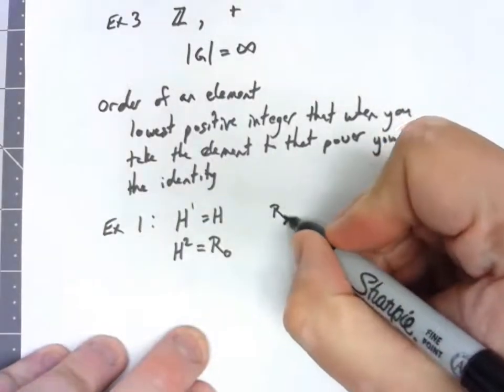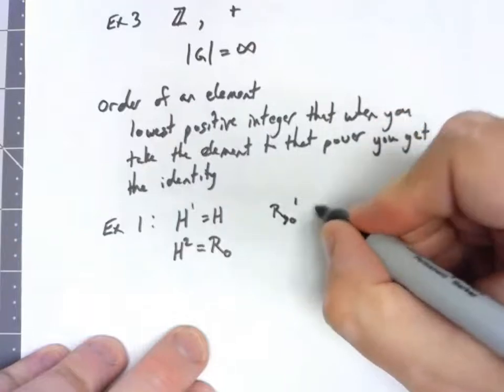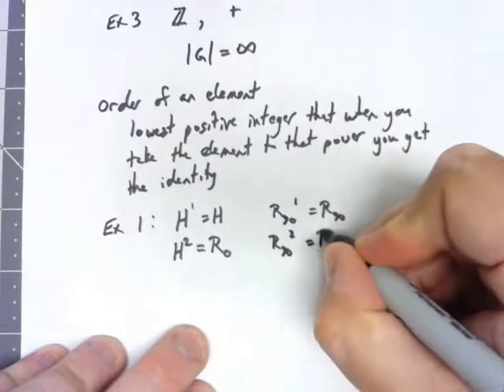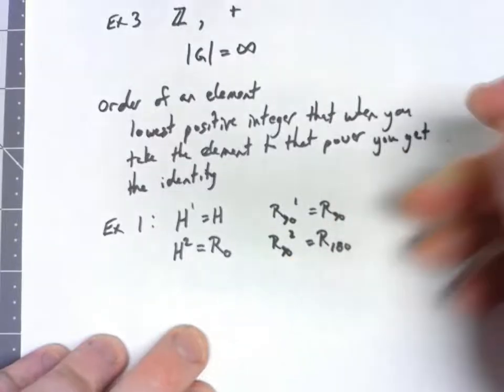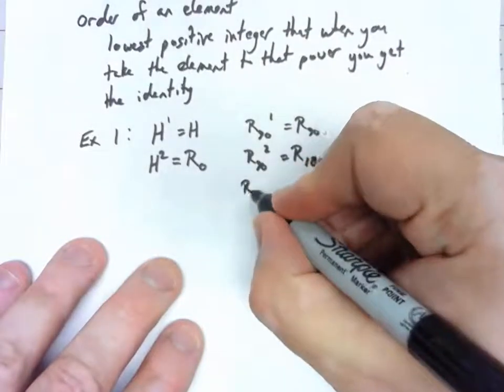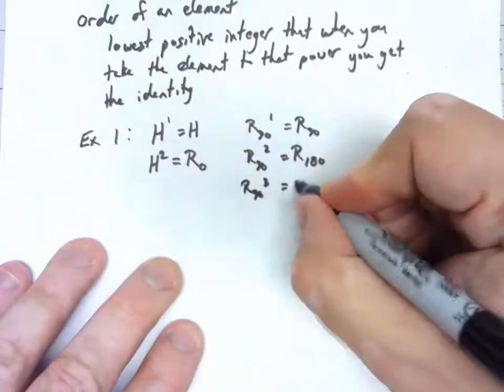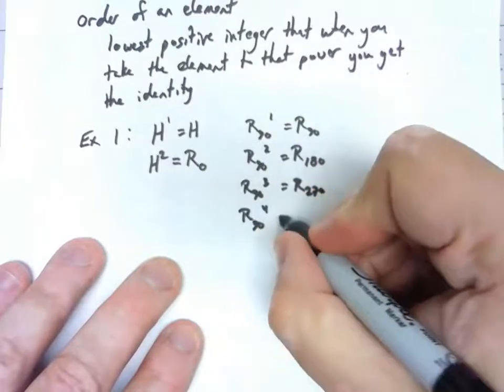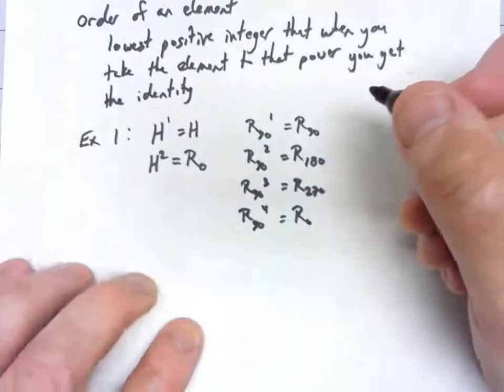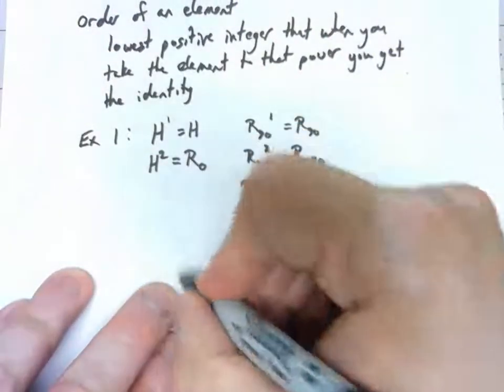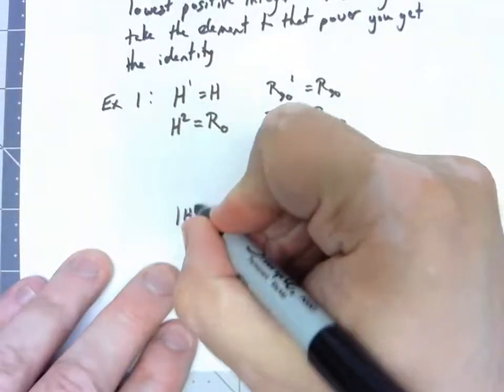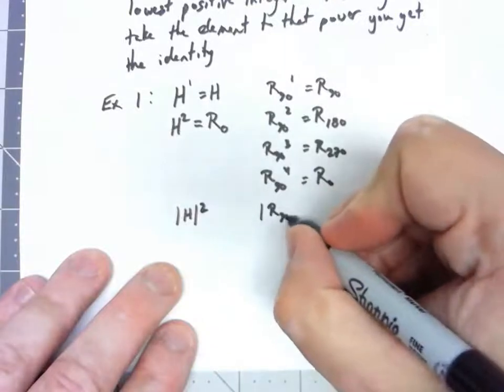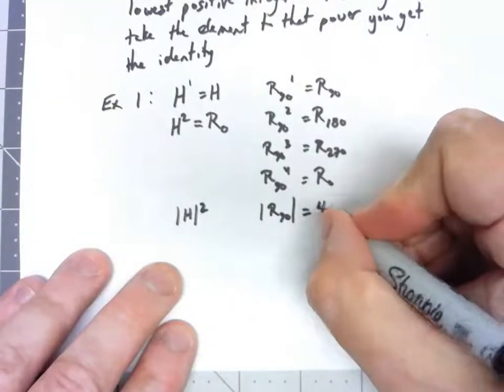On the other hand, a rotation by 90 to the first is a rotation by 90. A rotation by 90 to the second is a rotation by 180. A rotation by 90 to the third is a rotation by 270. A rotation by 90 to the fourth gives us back to that rotation by 0. So in this case, the order of element h was 2. The order of a rotation by 90, the order of that element, was 4.